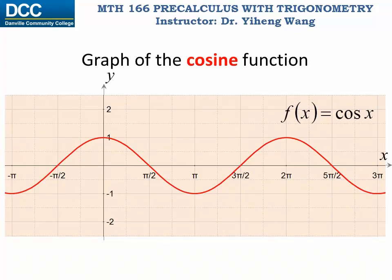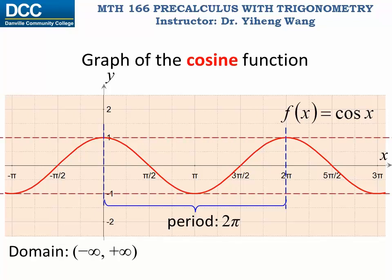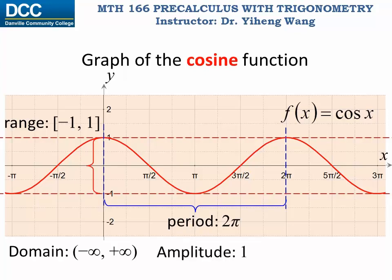By evaluating cosine function values at different angles, we can sketch the graph of the cosine function. Similarly, the cosine function has a period of 2π, corresponding to one full revolution. The domain for the cosine function also includes all real numbers. The cosine function value can only be between negative one and positive one, so the range is from negative one to positive one, including both ends. The overall height is two, and the amplitude is one.